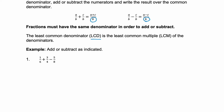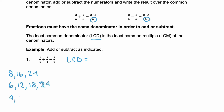Here we have three fractions that don't have common denominators, so we need to find the LCD. I start with my largest denominator, which is 8, and look at its multiples: 8, 16, 24. Then the next denominator, 6: 6, 12, 18, 24. So far they have 24 in common. For 4: 4, 8, 12, 16, 20, 24. So our LCD is 24. You don't always have to make a list like this, but it can help with tricky fractions or if you need the extra practice.